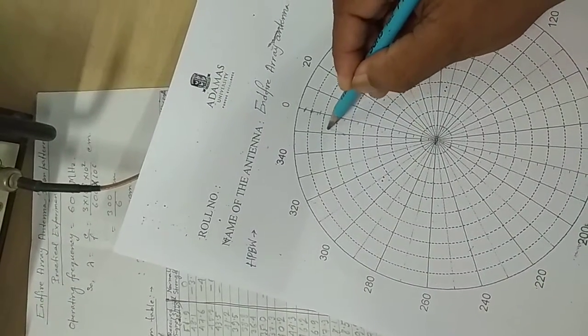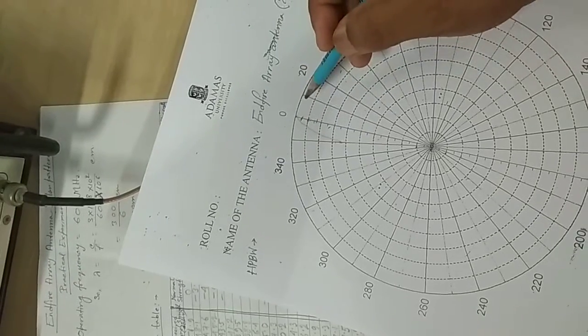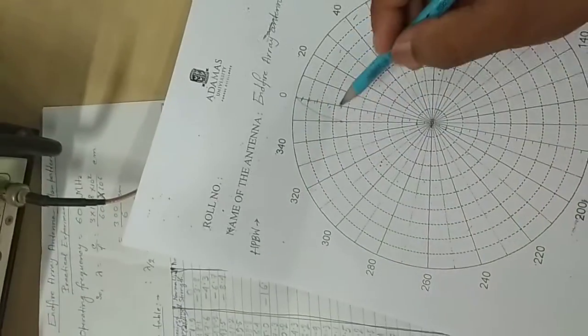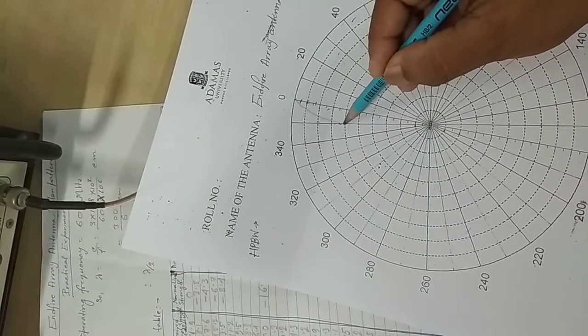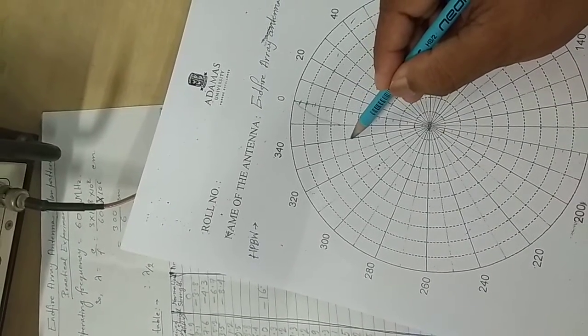0 to this, and the next value is minus 4.3, that is 4.3 around here.